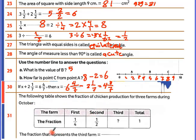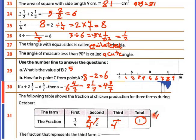The number line shows fractions representing thirds and quarters. To make denominators the same, convert 1 half to 2 over 4. Then the whole 1 is 4 over 4, and with 1 and 2, what's left is 1 over 4. So the third point is 1 over 4.